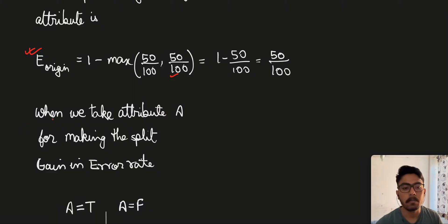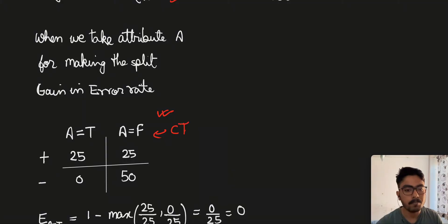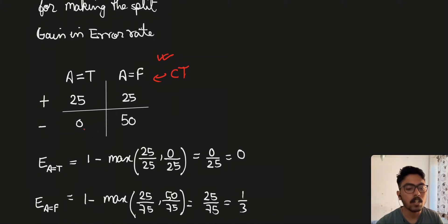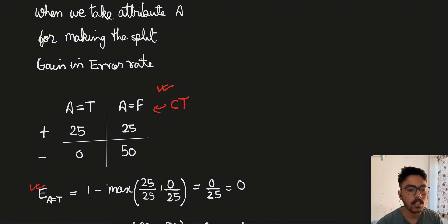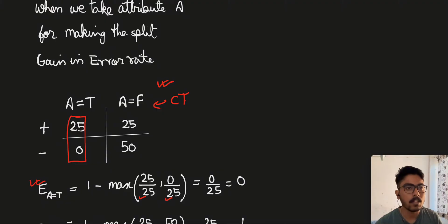Then we take attribute A for making the split. For the contingency table for A: when A is true, the number of positive instances is 25 and the number of negative instances is 0. When A is false, there are 25 positive instances and 50 negative instances. For the error rate when A equals T: 1 minus max of (25/25, 0/25). The total when A equals true is 25 plus 0, which is 25. So the denominator is 25 in both cases, and the number of instances in each class is in the numerator. We get 0 because we take 25/25 and 1 minus 1 is 0. For A equals false: 1 minus max of (25/75, 50/75) — the total is 75 — and the max gives us 25/75, which is 1/3.